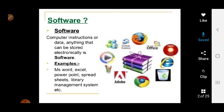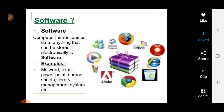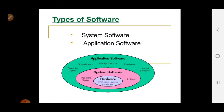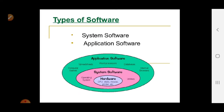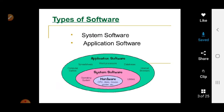There are two types of software: system software and application software. As you can see in the diagram, the hardware is at the base, system software is directly concerned with the hardware, and application software connects with the hardware using system software.